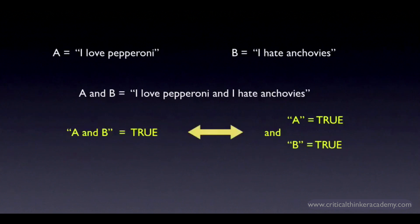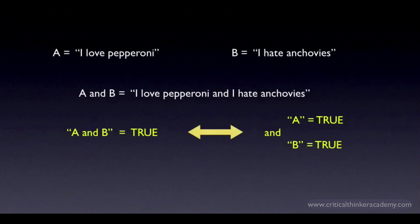We want to know the conditions under which the conjunction as a whole is true or false. In this case, it's pretty obvious. The conjunction A and B is true just in case each of the conjuncts is true. If either one is false, then the conjunction as a whole is false.